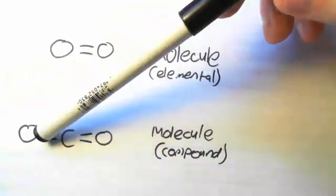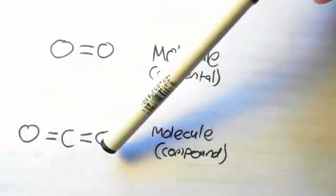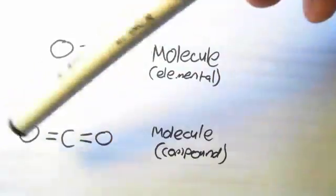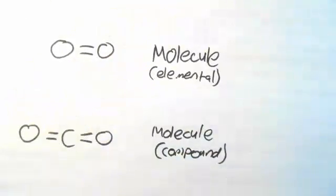The oxygens have the same number of protons, but the carbon has a different number of protons. Because they're different elements bonded together, they're called a compound.